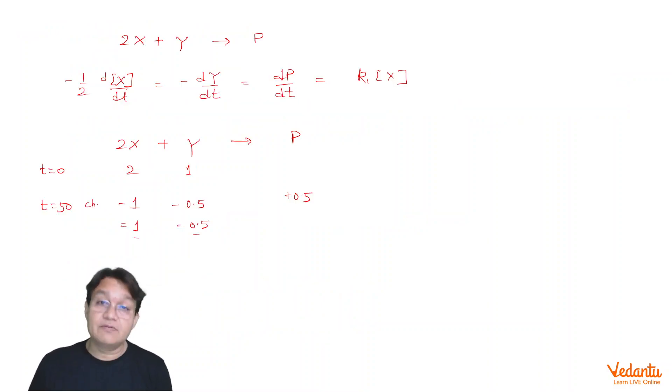2X plus Y is changing into P, and we can write the rate expression like (1/2)(dX/dt) equals minus (dY/dt) equals (dP/dt), which is k₁X. This is first order with respect to it, as given, and initially we started with 2 and 1 of X and Y respectively.